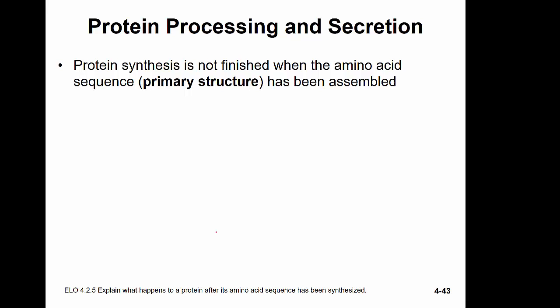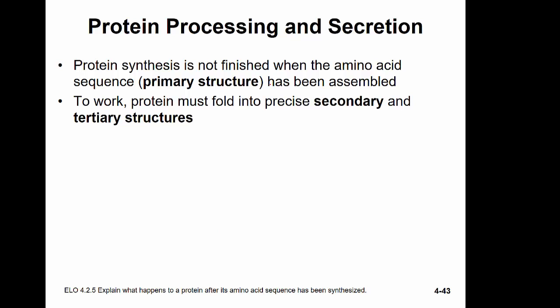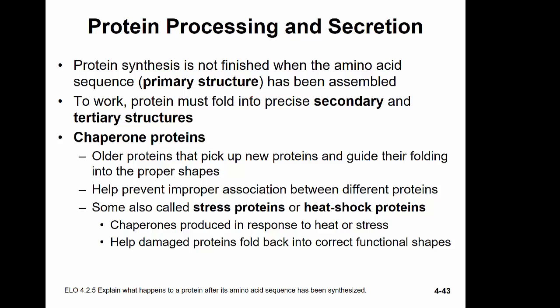Once the polypeptide is made, it still needs to be folded properly to function. We've made the primary structure — the sequence of amino acids — but must fold it into a secondary structure and then tertiary structure. Special proteins called chaperone proteins pick up the peptide chains and guide their folding, preventing improper association between different proteins. Some called stress proteins or heat shock proteins are produced in response to heat or stress and help damaged proteins fold back into their correct functional shape.